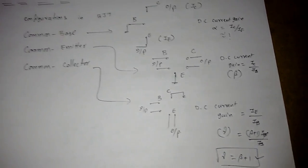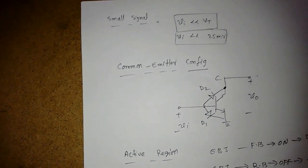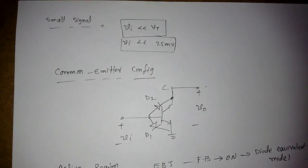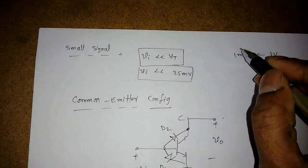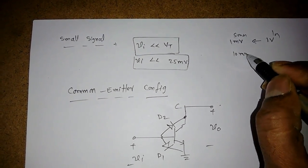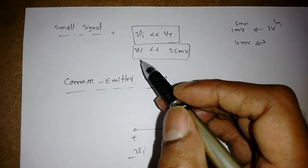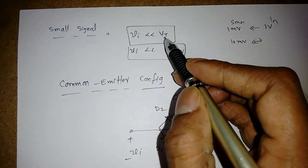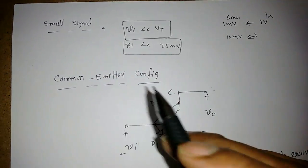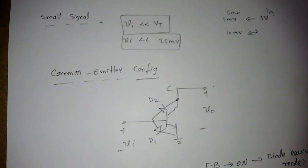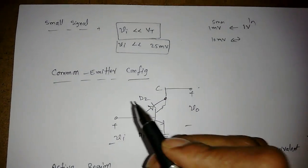Now we will see what a small signal is and what models we need to find. Generally, a small signal is something very small compared to a reference — for example, 1 millivolt is a small signal compared to 1 volt. In BJT, we compare with the thermal voltage VT. A signal VA is called a small signal when VA is very much less than VT, which is 25 millivolts.